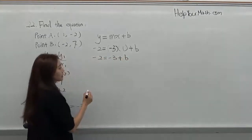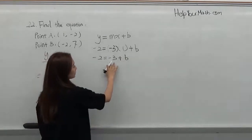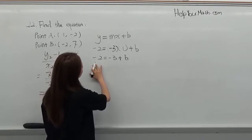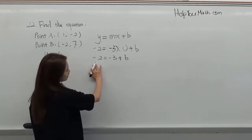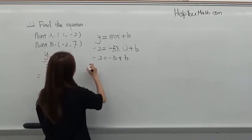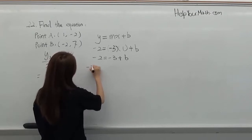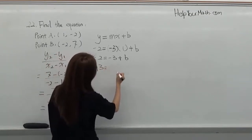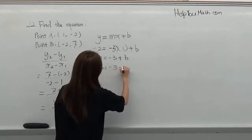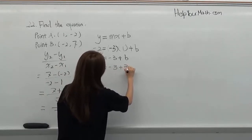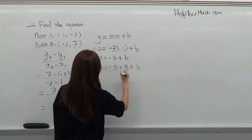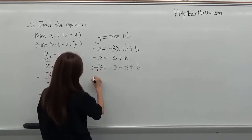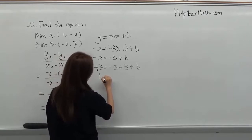So right now what we have to do is bring the negative 3 to the left side, so we will add 3 to both sides. So here should be minus 2 plus 3 equals minus 3 plus 3 plus b. So the final answer will be 1 equals b.